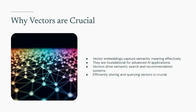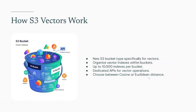So, how does S3 Vectors actually work? AWS has introduced a new type of S3 bucket called a vector bucket. Inside these vector buckets, you create vector indexes — think of these as the organized structure that allows for super-fast similarity searches. Each vector bucket can hold up to 10,000 vector indexes, and each index can store tens of millions of vectors. S3 Vectors comes with dedicated APIs like put vectors, query vectors, and list vectors, making it incredibly simple to interact with your vector data. You define the distance metric — either cosine or euclidean — and the dimensions of your vectors, which should match your embedding model. S3 automatically optimizes the underlying vector data for the best price performance, even as your datasets scale, meaning you don't need to worry about provisioning or managing complex vector database infrastructure.